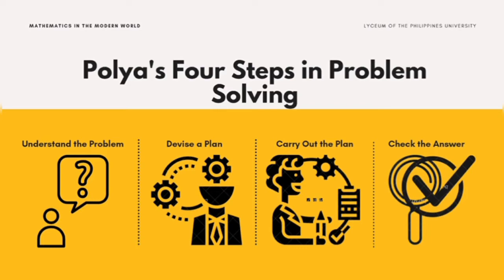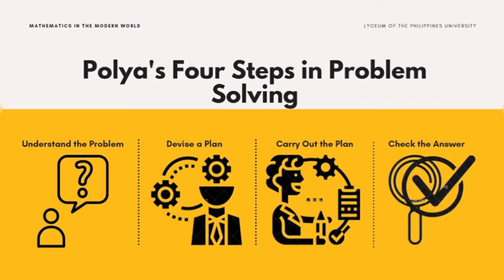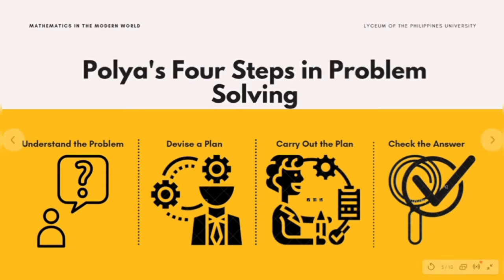In Step 1, understanding the problem — sometimes the problem lies in understanding the problem. If you are unclear as to what needs to be solved, then you are probably going to get the wrong results. In order to show an understanding of the problem, you need to read the problem thoroughly and carefully so that you would be able to understand it. In addition, to understand the problem, we need to thoroughly look for the information given.